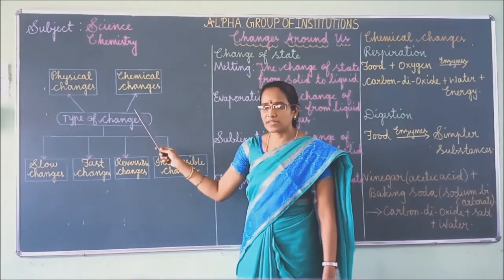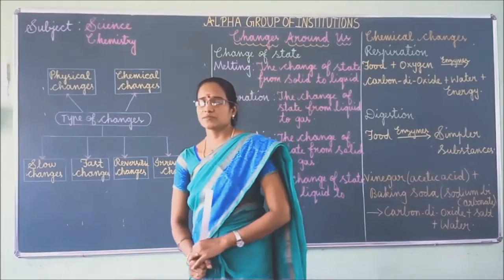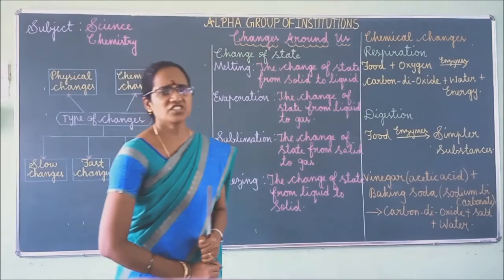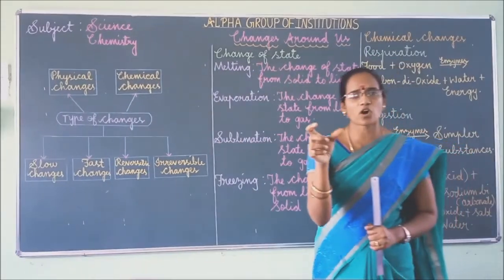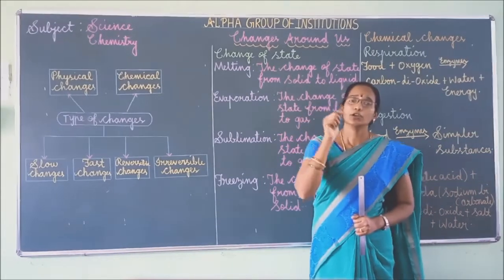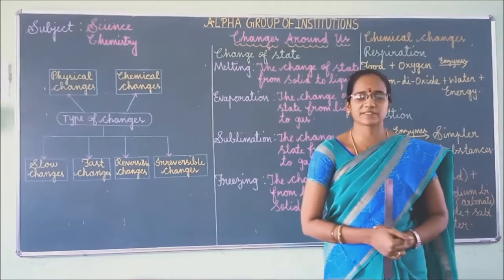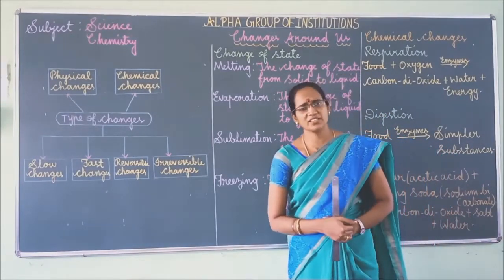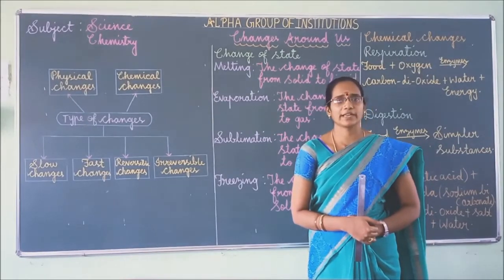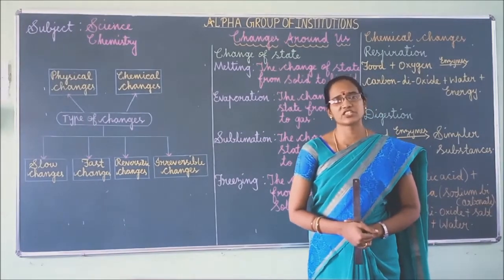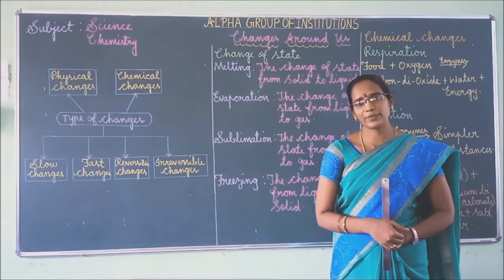Now we move to chemical changes. A chemical change is a change in which a new substance is formed due to the change in the composition of the substance. That is called a chemical change.